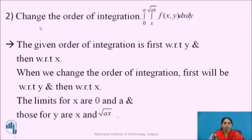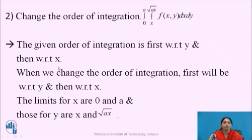Now let us go for the second example. Change the order of integration: integration from 0 to A, integration from x to root(Ax), f(x, y) dy dx. The outer integral has limit 0 to A, and the inner integral has limits from x to root(Ax). As the limits of the inner integral are expressed as a function of x, these are the limits of y, and the constants are the limits of x. So the given order of integration is first with respect to y, and then with respect to x.